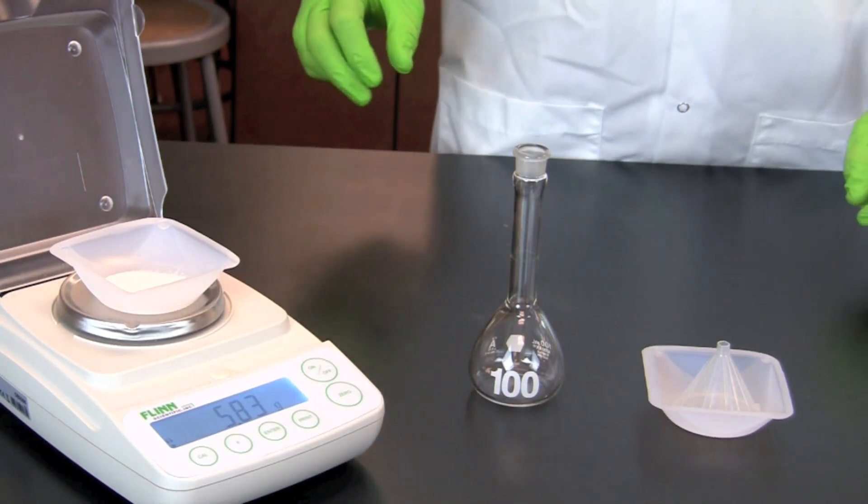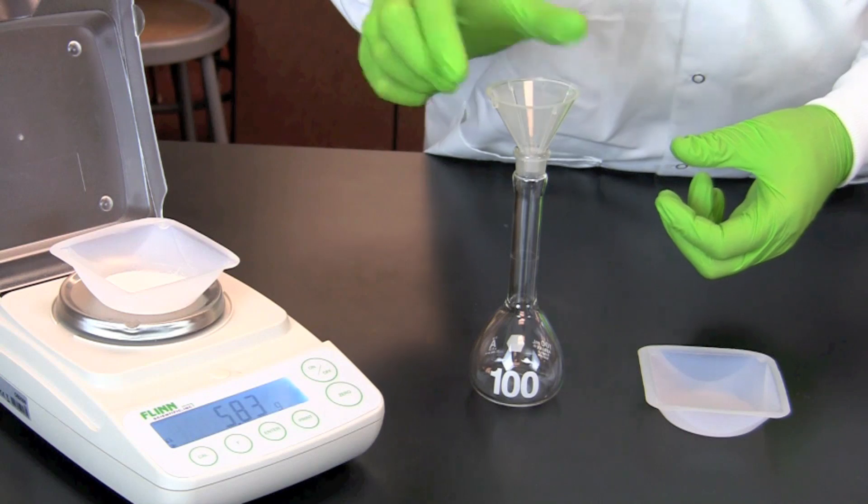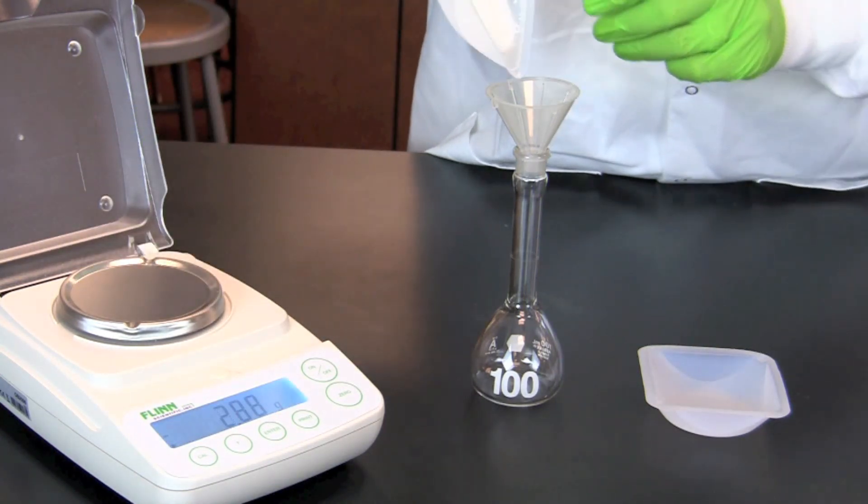The solution will be made in a 100 ml volumetric flask. To get the sodium chloride into the volumetric flask, we first place a powder funnel on top of the flask.